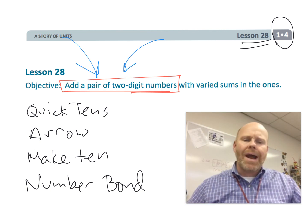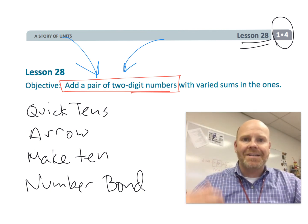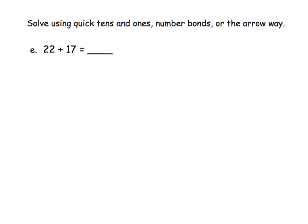Let's get practicing. The directions say to solve using quick tens, number bonds, and or the arrow way. So what I'll do is I'll just do one of each. This problem I'll do the quick tens and ones method.